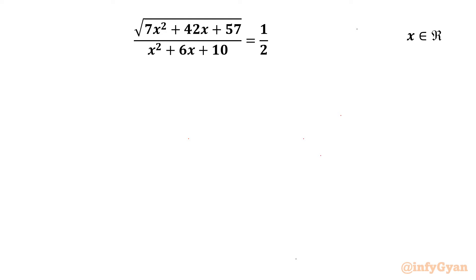Welcome back to Infigyan, my dear friends. In today's video we are going to take up one very interesting question from radical equations. It is square root of (7x² + 42x + 57) over (x² + 6x + 10) equal to one half. And we have to find out real solutions only.